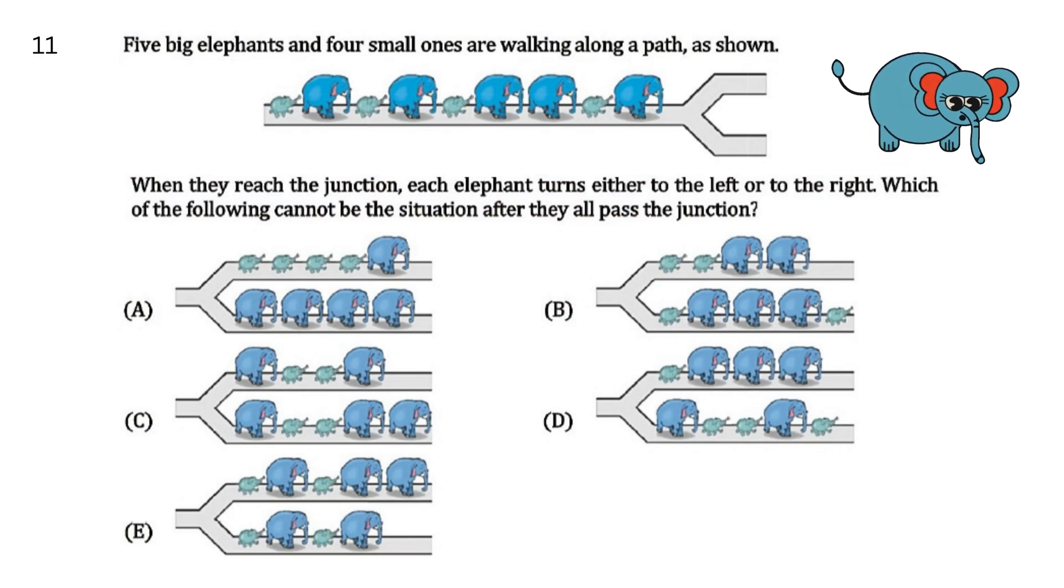Five big elephants and four small elephants are walking along a path as shown. When they reach the junction, each elephant turns either to the left or to the right. Which of the following cannot be the solution after they all pass the junction? In options में से, कौन सा ऐसा option है, जो मुम्किन नहीं है?